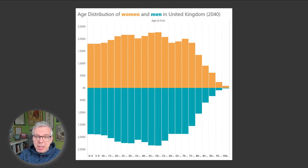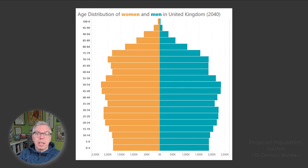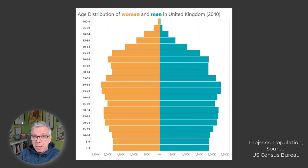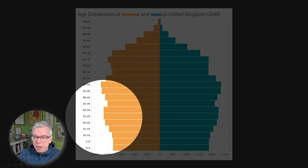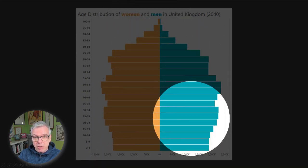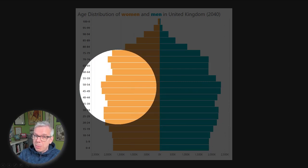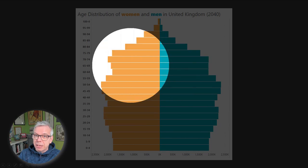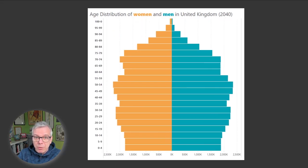You may remember these from geography — bar charts showing population in a country across different age bands. Normally they're rotated this way. This is a great chart if you want to know how many females there are compared to females in other age bands, or the same for males.